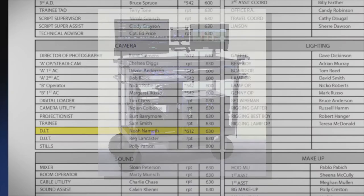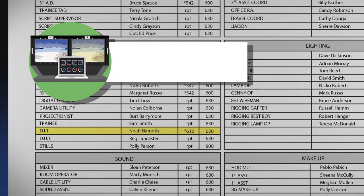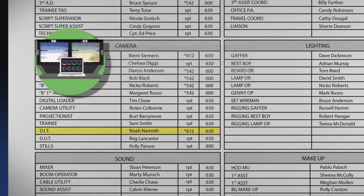A digital imaging technician's focus is on colour and utilizes a digital colour grading station on set. The DIT works with the director of photography to produce the best picture possible. The DIT makes sure that multiple cameras see and record the same colour using specialised equipment, and often dials the camera's iris to make sure images are not too dim or blown out. Sometimes they also coordinate how the camera framing is to be set up with the DOP and editing team.